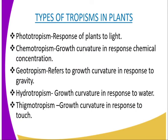We have another one known as chemotropism, whereby we say these are growth curvatures in response to chemical concentration. There are some plants which grow towards certain chemicals and others grow against certain chemicals. Plants which show positive chemotropism are the ones which grow towards certain chemicals, and others show negative chemotropism.